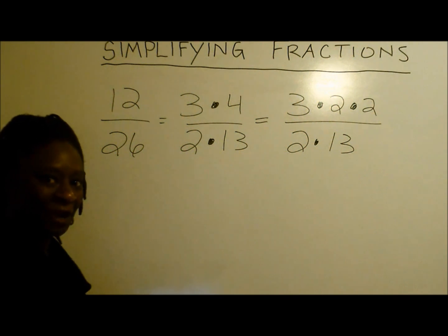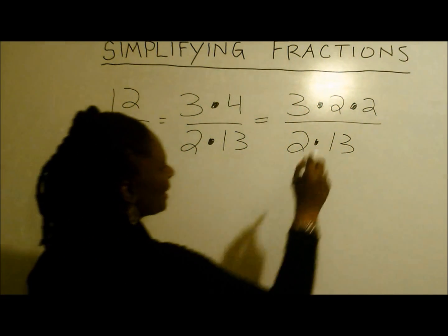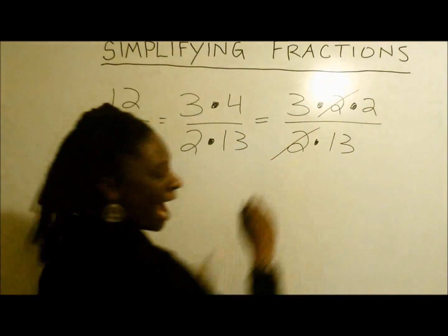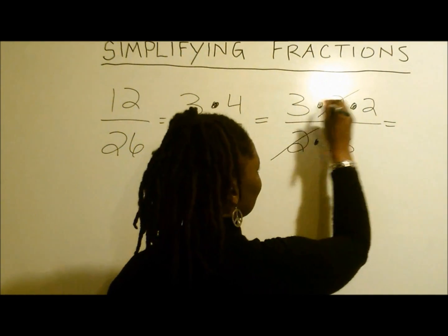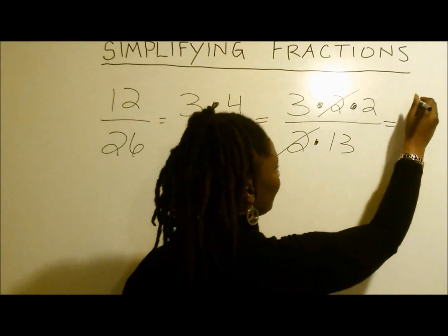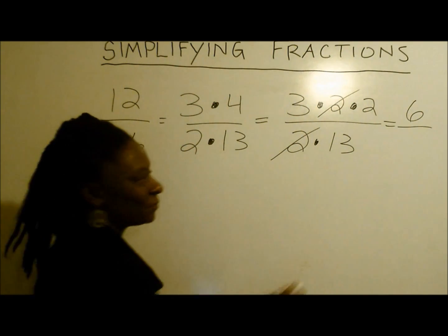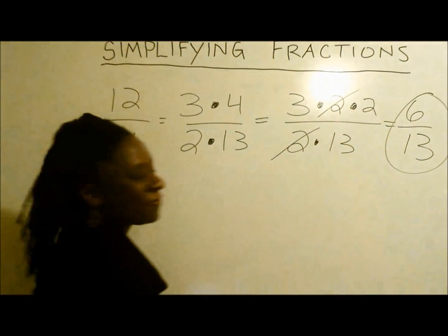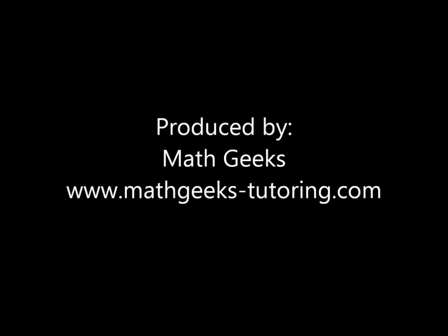Alright, are we ready to eliminate our common factors? Yes. We can get rid of this 2 here and say goodbye to that 2. So now we're left with 3 times 2 is 6. And the 13 stands alone. Great — 6 over 13. That's our answer. We'll be right back.